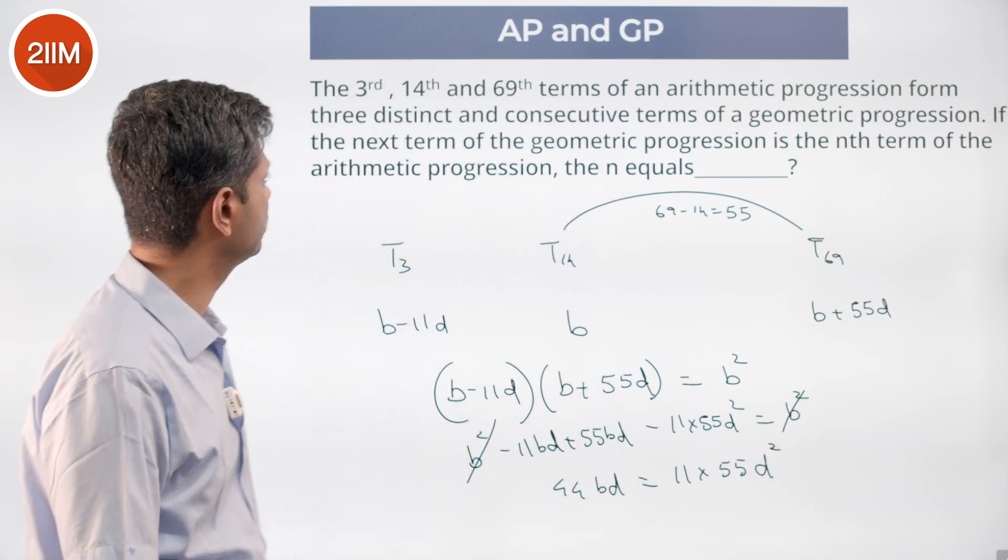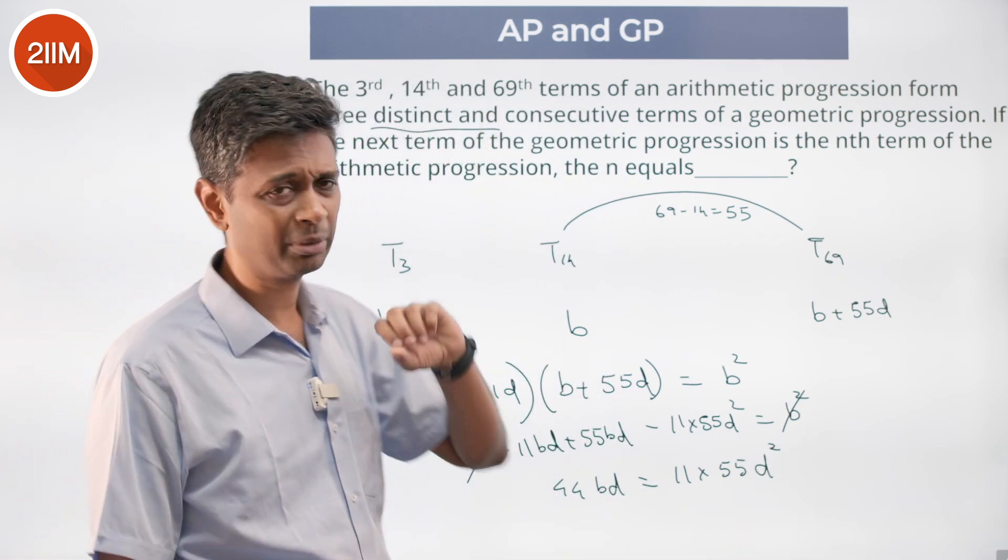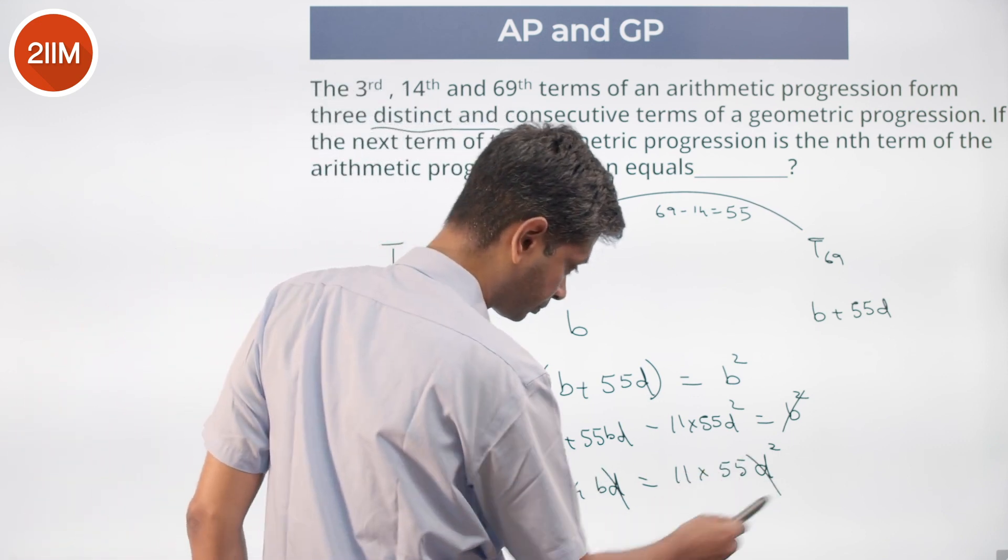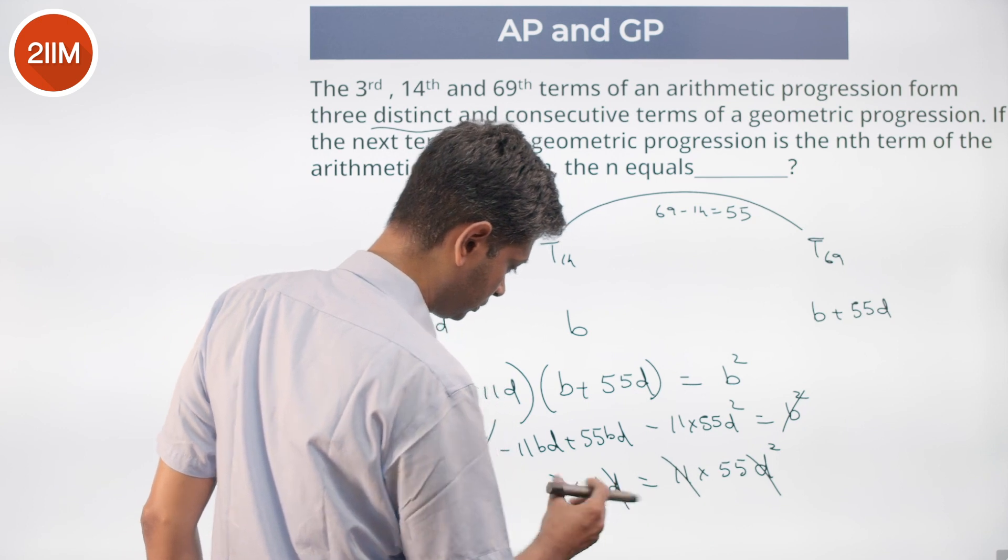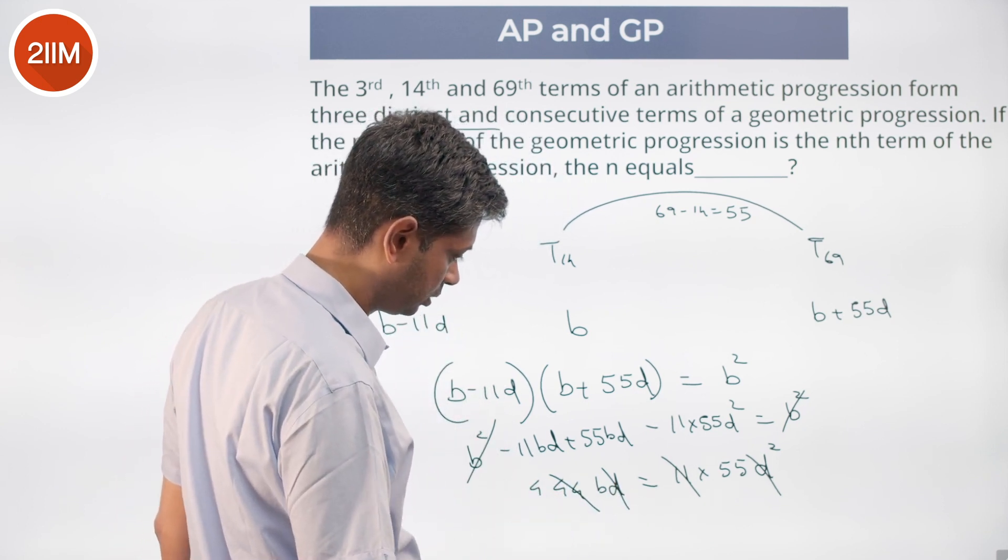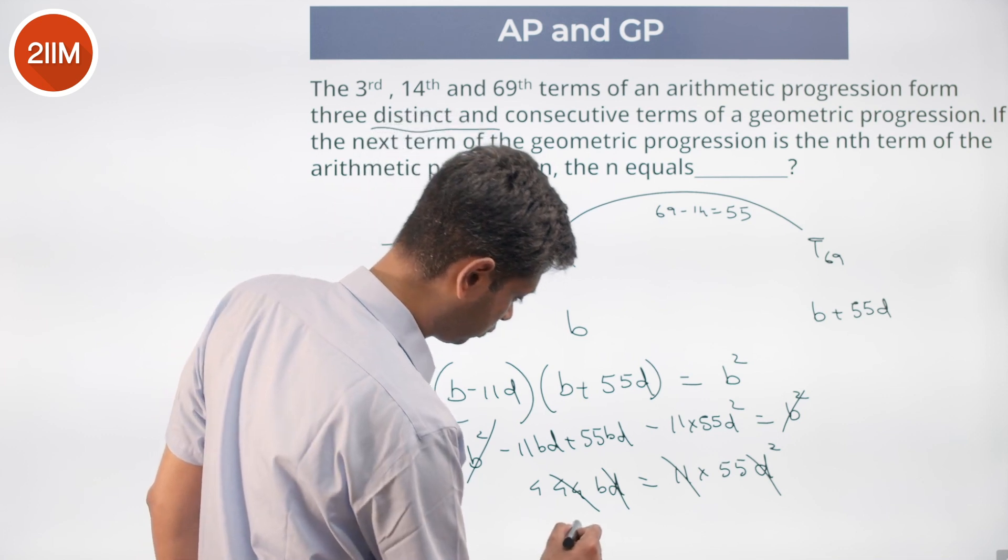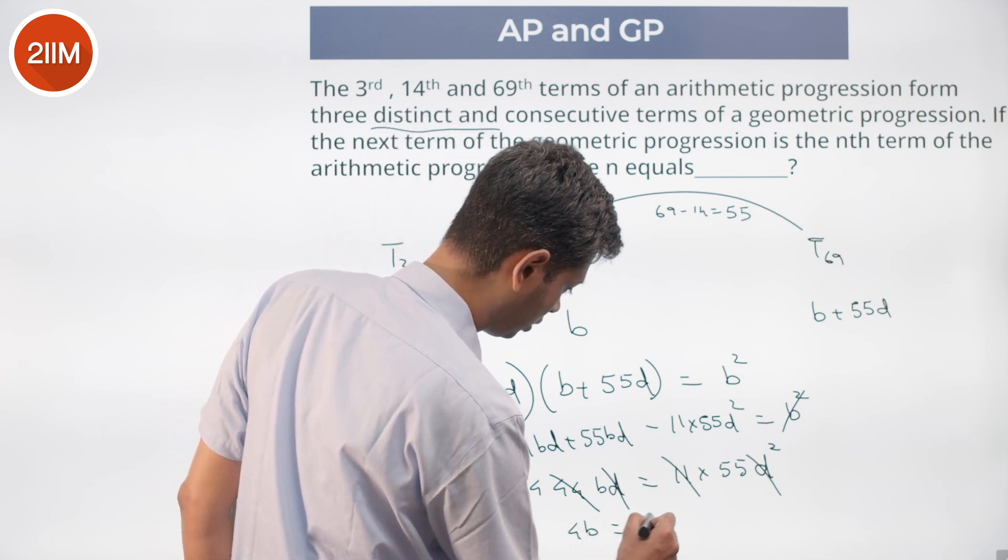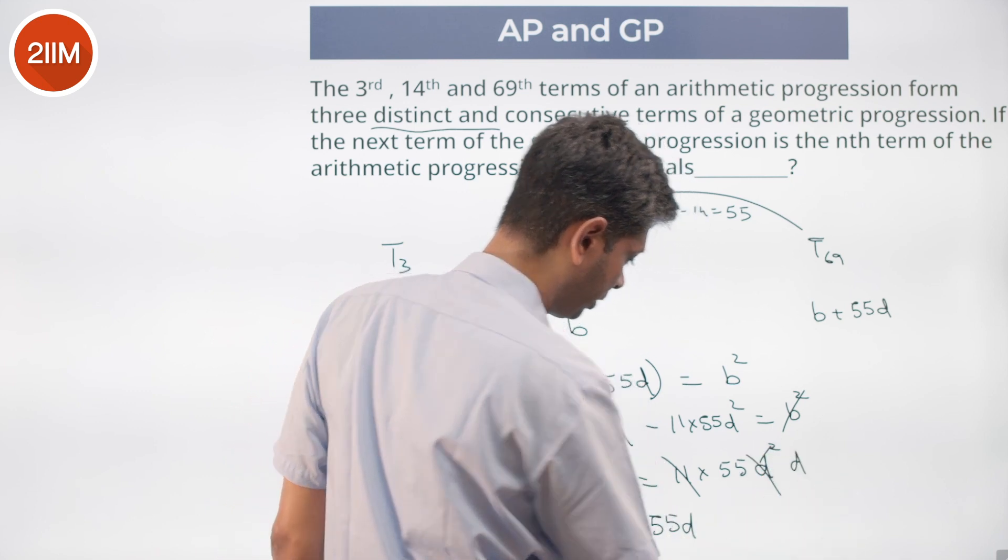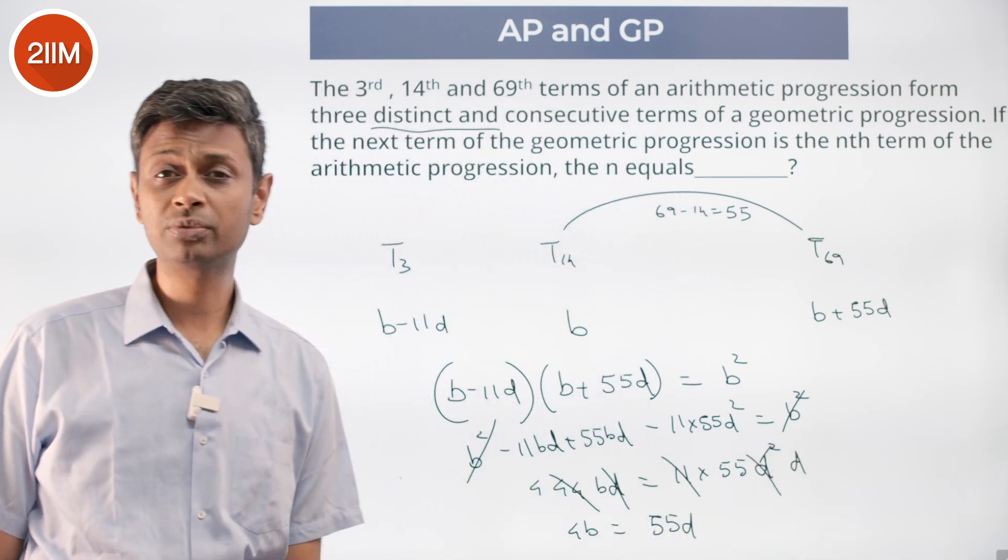We have told this is distinct and consecutive terms. That means the common difference is not 0. They can cancel. I get that 4b equals 55d. I am cancelling 1d, 1d, 1d remains. 4b equals 55d.